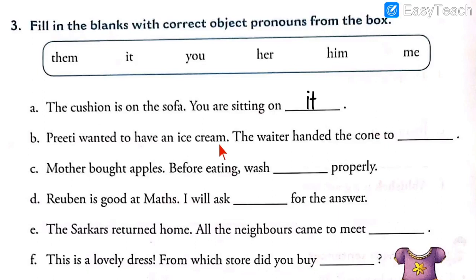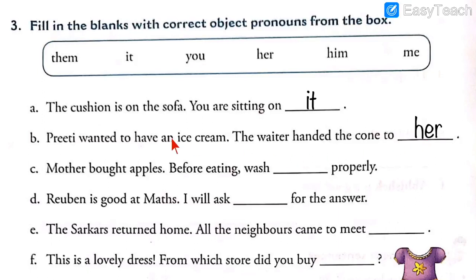Number two: 'Preeti wanted to have an ice cream. The waiter handed the cone to ___.' We are talking about the girl Preeti. For a girl, the appropriate object pronoun is 'her'. Answer: 'The waiter handed the cone to her.' Here, 'her' refers to the noun Preeti.